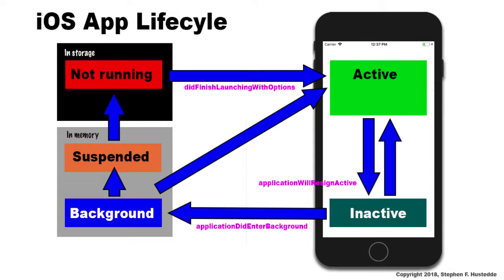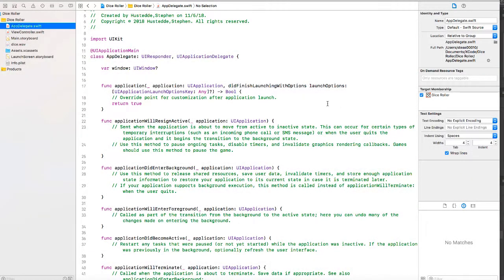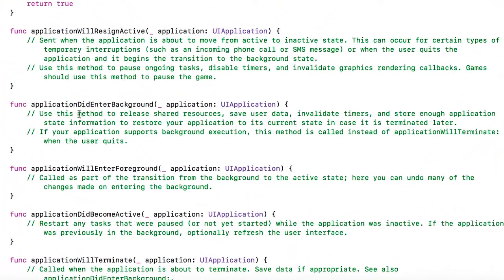When moving from inactive to background, there's applicationDidEnterBackground — this is typically where we might want to do some automatic saving of data or settings. Moving from inactive to active, there's applicationDidBecomeActive, and that same event is triggered when moving from background or suspended to active, along with applicationWillEnterForeground. There are stubs for each of these events in appdelegate.swift, and we can just add code to them.